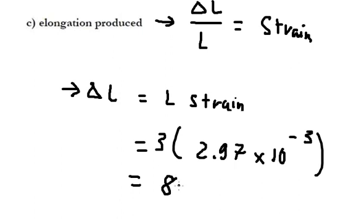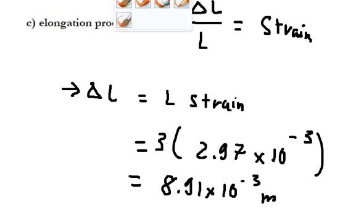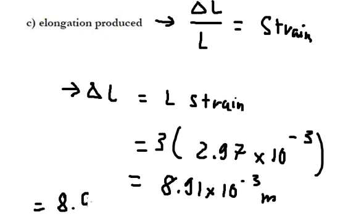So we got 8.91 × 10⁻³, and oh sorry, this is about meters. And now we need to convert into millimeters, that is about 8.91 millimeters.